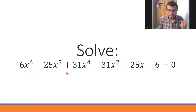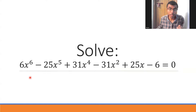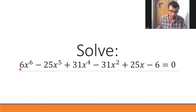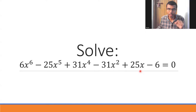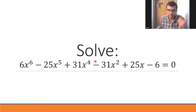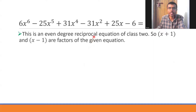Hello learners, let us see how to find roots for this 6th-degree polynomial. The degree is even, and this is also a reciprocal equation — there is some symmetry. The coefficient of x⁶ is 6 and the constant is -6. Coefficient of x⁵ is -25 and of x is +25. Coefficient of x⁴ is 31 and of x² is -31. The coefficient of x³ is 0. So this is an even-degree reciprocal equation of Class 2 — important to mention for your board exam.